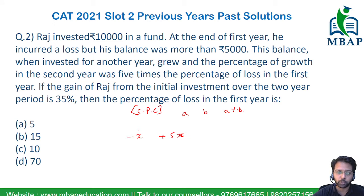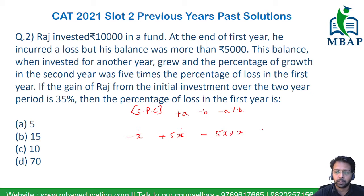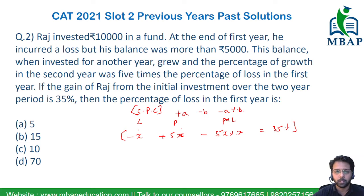So the first value is minus x, the second value is plus 5x, and since one is positive and one is negative, a into b will also be negative — giving minus 5x² / 100, which is 5x percentage of x. This entire expression should equal 35%, representing the first loss, the second profit, and the profit-into-loss interaction via the successive percentage principle.